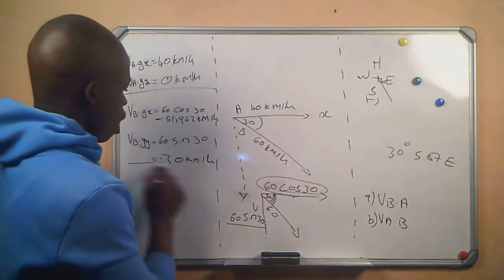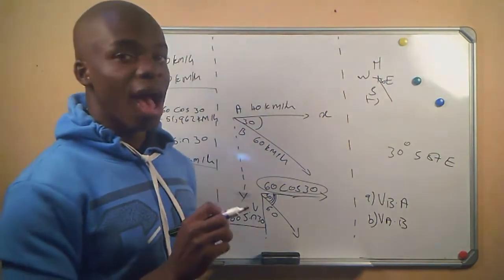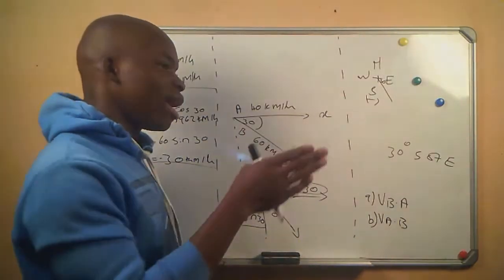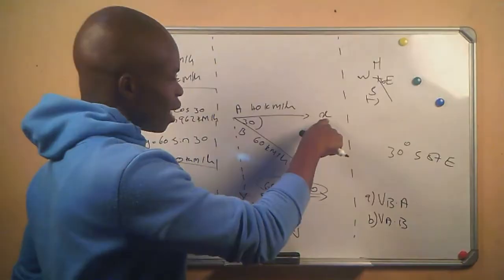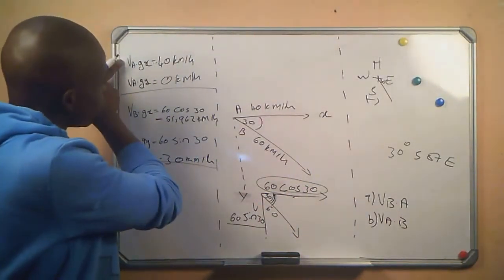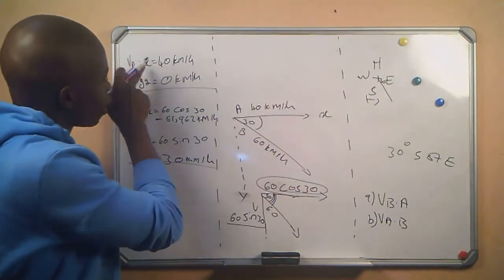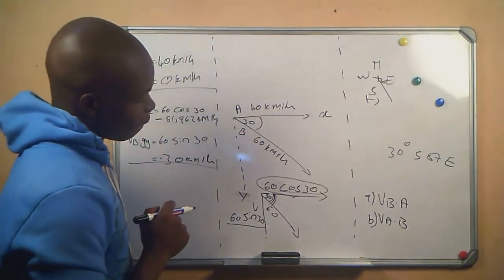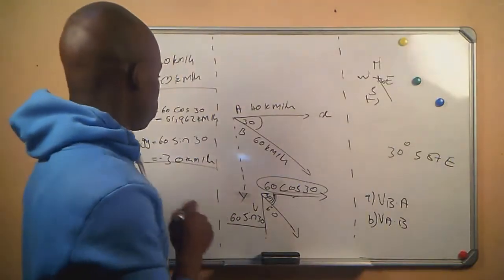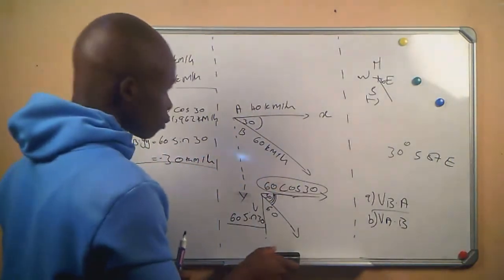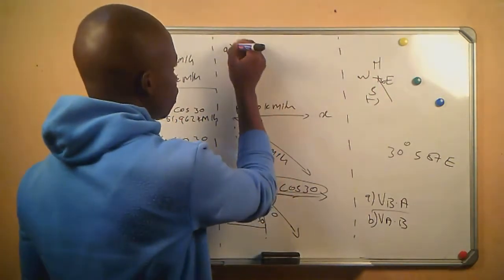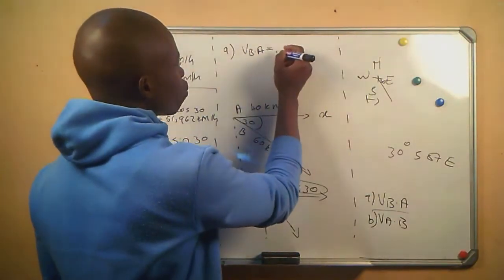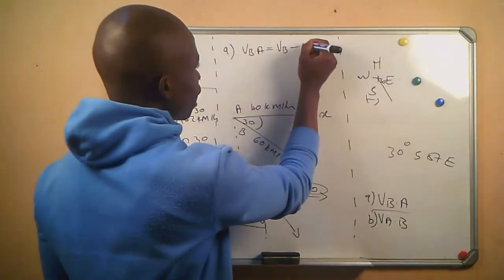Now we have our relative velocity for each car relative to the ground. Since these cars are not moving in a parallel path, we will have to consider both the X and Y directions for each car. Now we go to our first question: calculate the velocity of B relative to A. We know this will be VB minus VA.